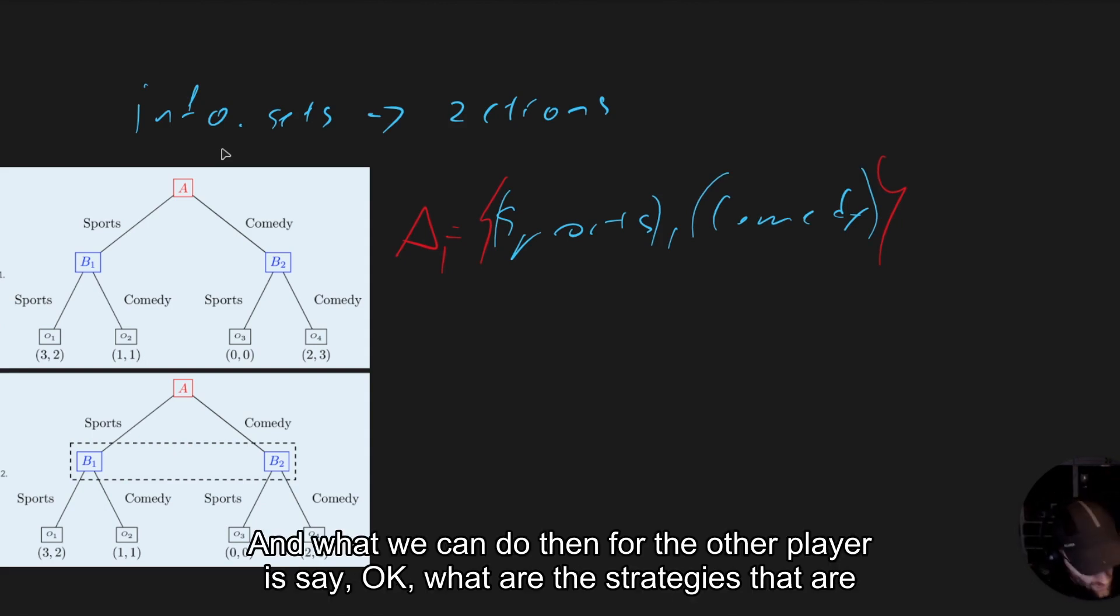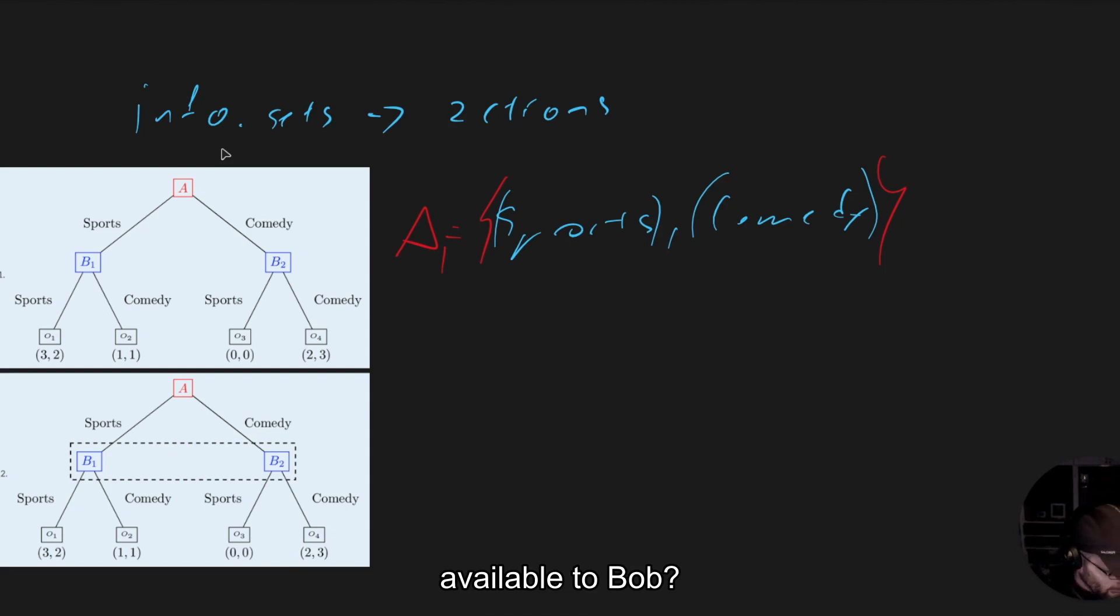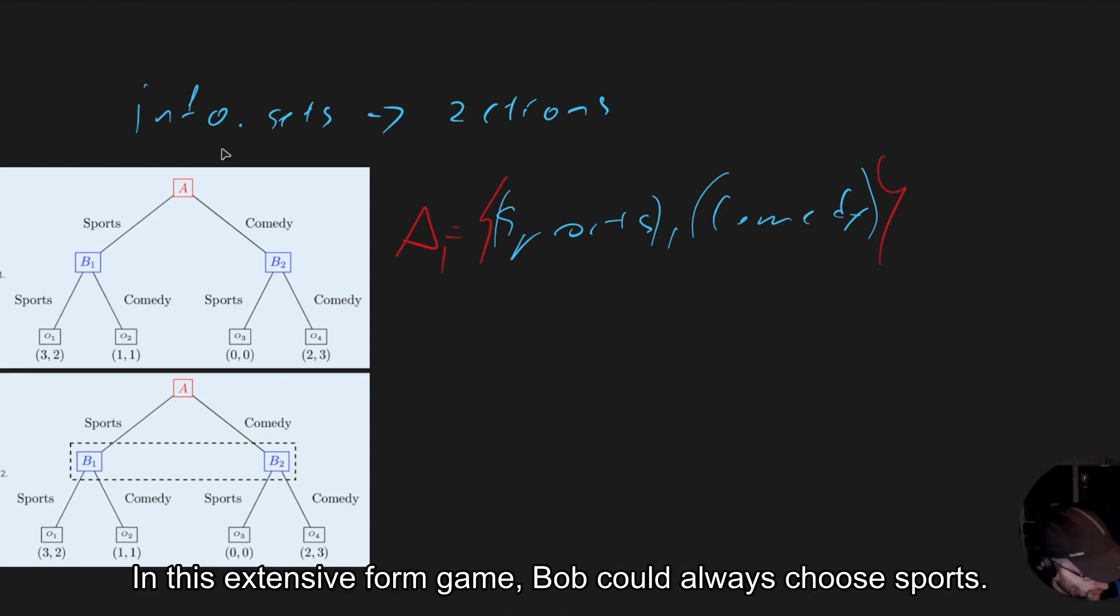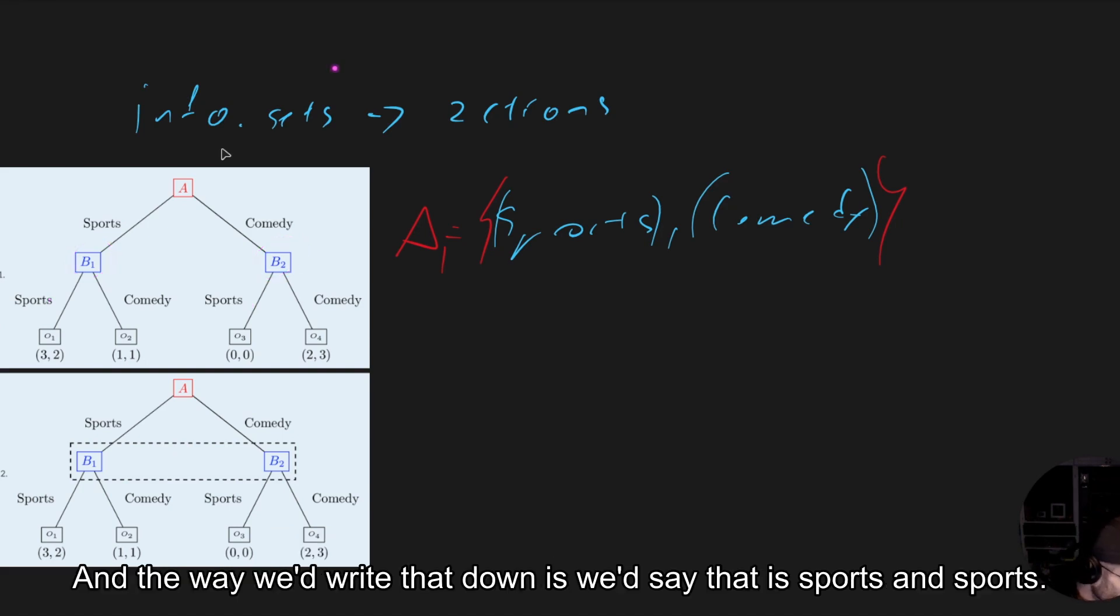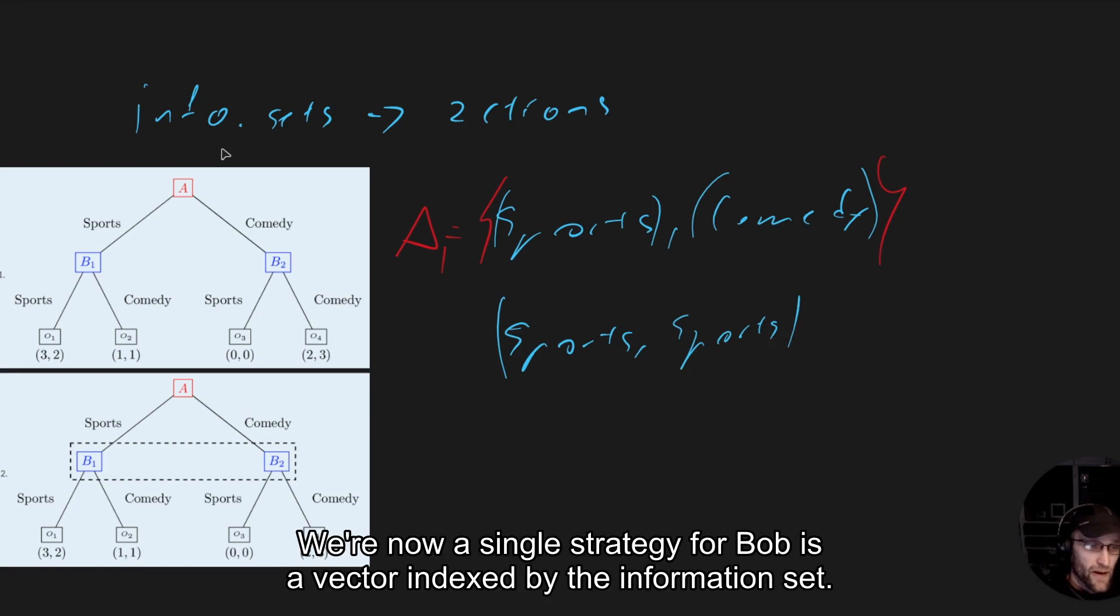What we can do then for the other player is say, okay, what are the strategies that are available to Bob? In this extensive form game, Bob could always choose sports. That means at this information set choose sports and at this information set choose sports. And the way we'd write that down is we'd say that is sports and sports.